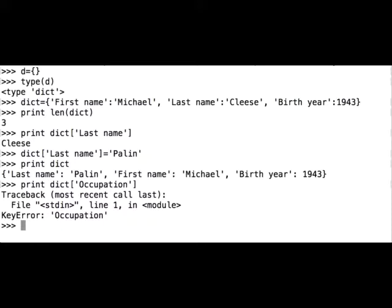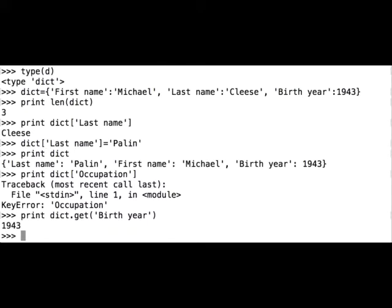Now let's use the get method. First we will use it on a key that can be found in the dictionary. For example, print, dict, period get, brackets, and let's go with birth year. The program returns 1943.